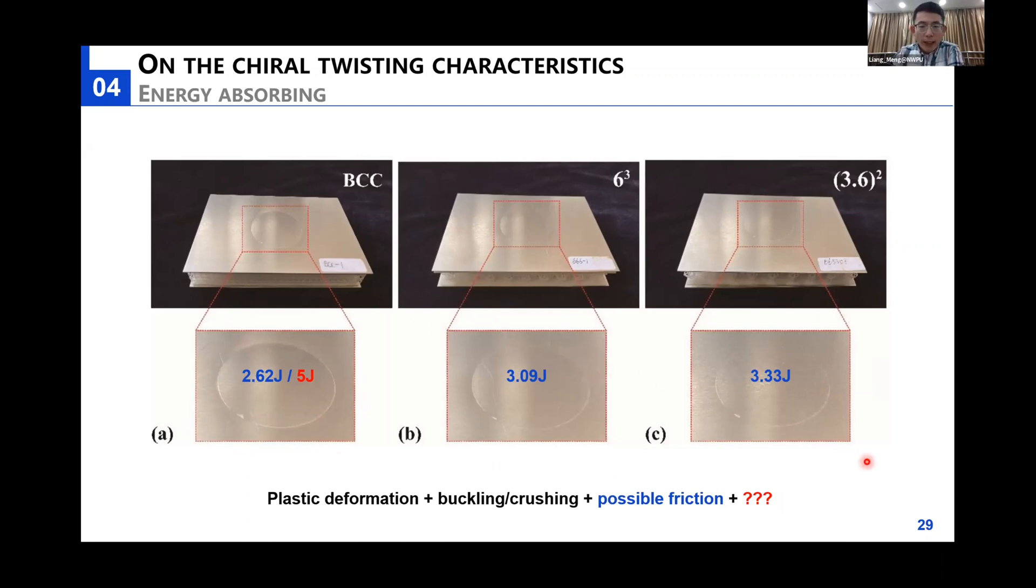Despite seeing that our structures have better energy-absorbing properties, how can we explain these unique properties? Where has the energy been absorbed? It has been absorbed by the plastic deformation, the buckling or crushing of these lateral struts, or maybe possible frictions, or some other kind of energy dissipations. At this stage, we say that an urgent demand is still put forward for a reliable finite element code for critical insight into this better energy-absorbing capacity.